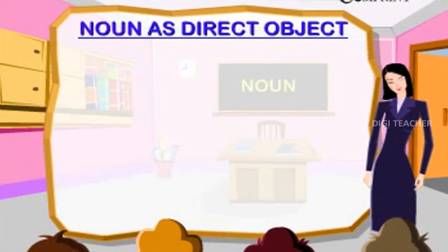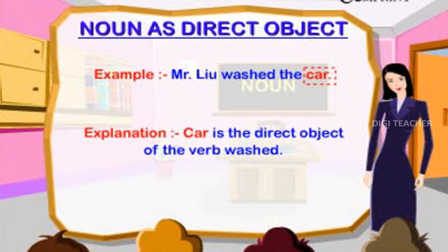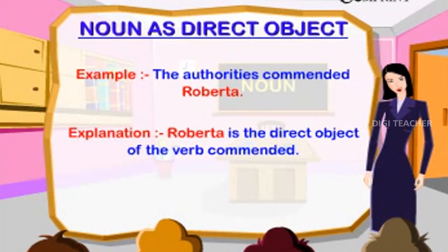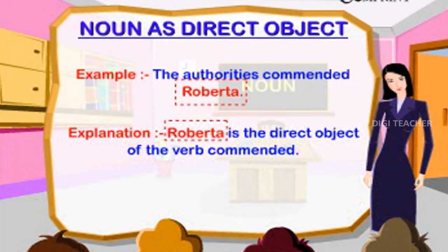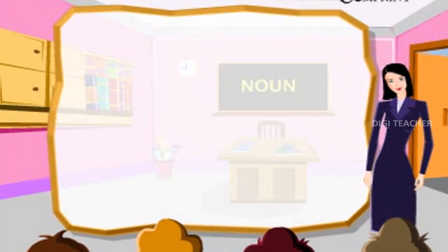Noun as Direct Object. Example: Mr. Liu washed the car. Car is the direct object of the verb washed. Example: The authorities commended Roberta. Roberta is the direct object of the verb commended.